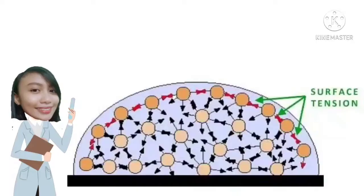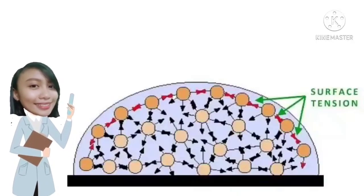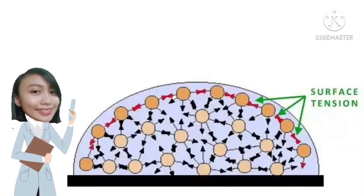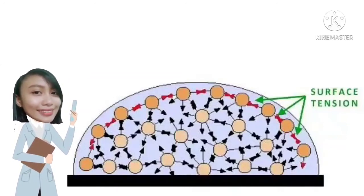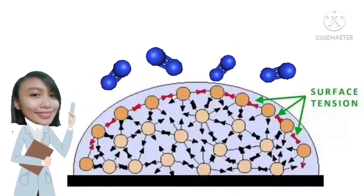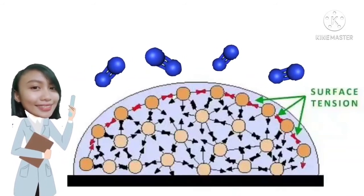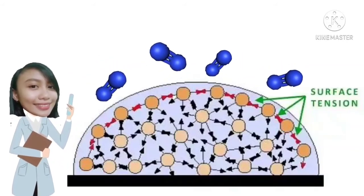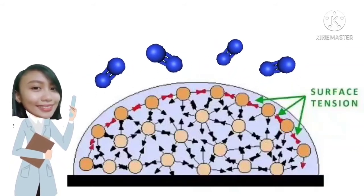The droplets on our penny contain liquid molecules, and those molecules want to stick close together. The forces that keep them in close proximity to each other are called cohesive forces. Cohesion happens between all the molecules in the liquid, but because the molecules in the middle of the droplet pull each other equally in all directions, they generally cancel each other out. However, the molecules at the surface of the droplet have air molecules above them instead of liquid molecules.